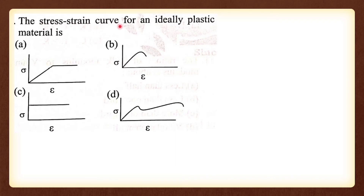The stress-strain curve for an ideally plastic material shows an elastic zone followed by a plastic zone — this is the elasto-plastic curve. Option D is the correct answer.